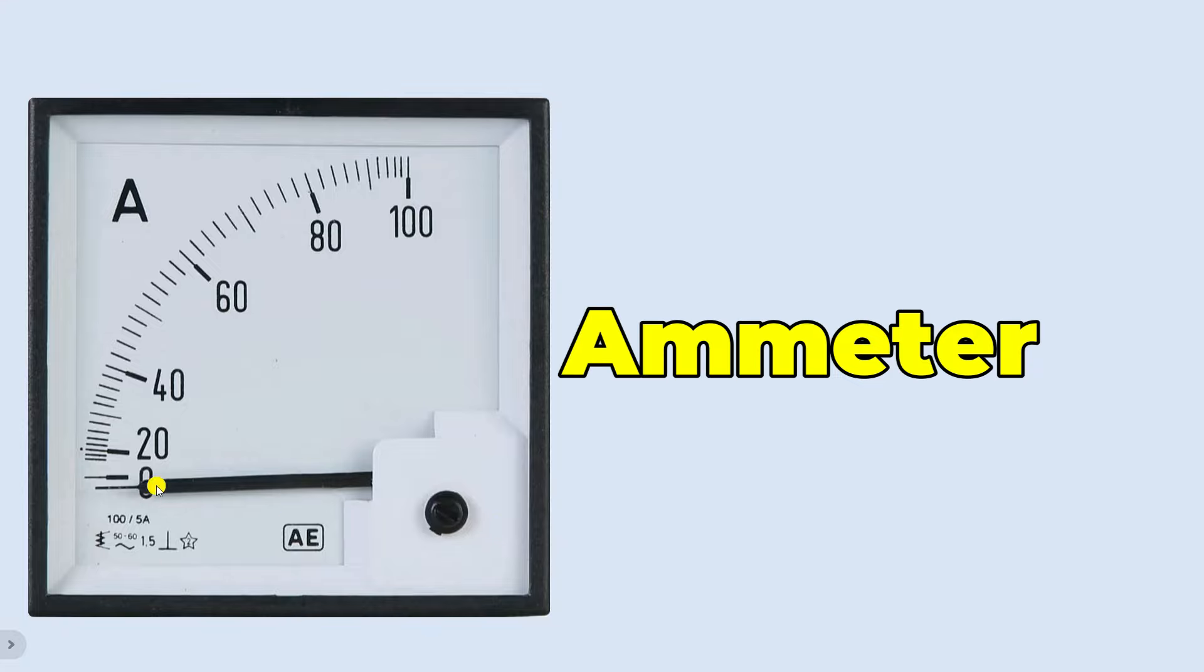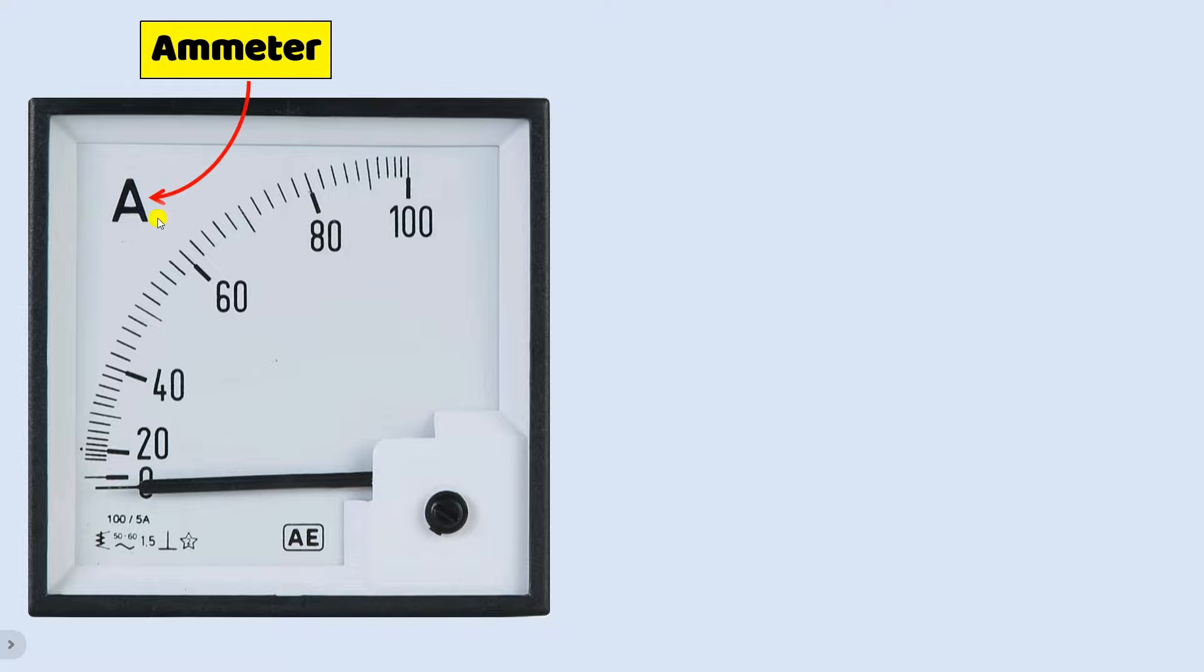We all know why we use ammeter, but we don't know what is the meaning of the details written on ammeter. So let me tell you through this short video. First of all, we will talk about what is the meaning of the letter A written here. You must know that A means ammeter, which means this symbol tells us that this device is our ammeter.